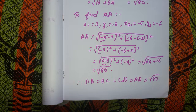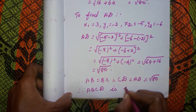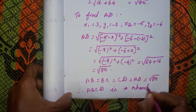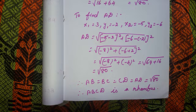Here all the sides are equal. Therefore AB = BC = CD = AD = root 80. All sides are equal to root 80. If opposite sides are equal it is a parallelogram; if all the sides are equal it is a rhombus. Clear?